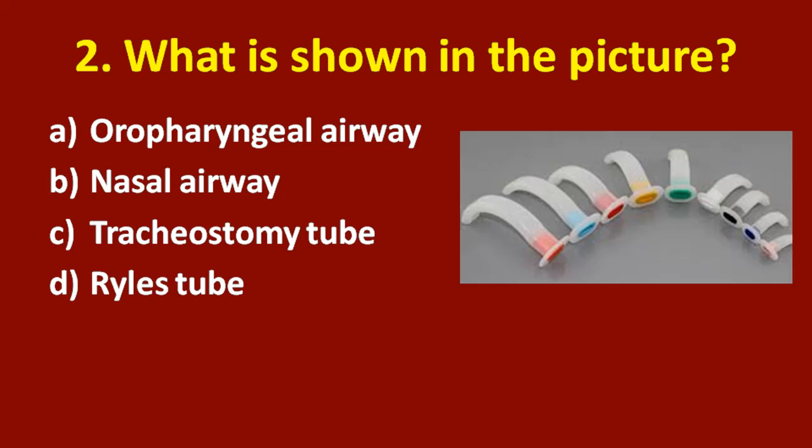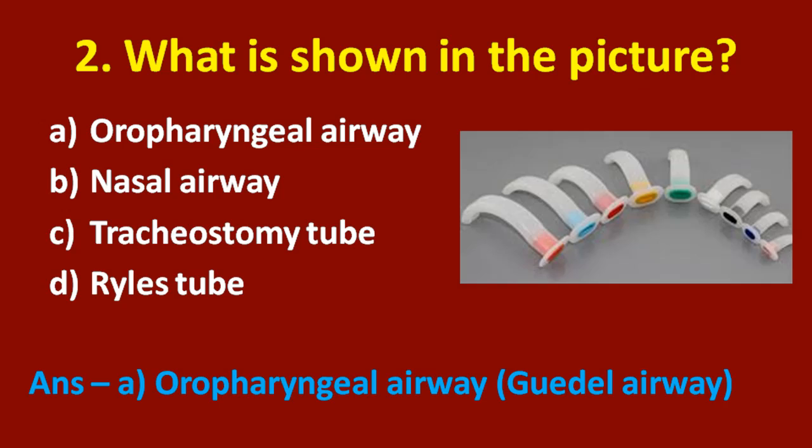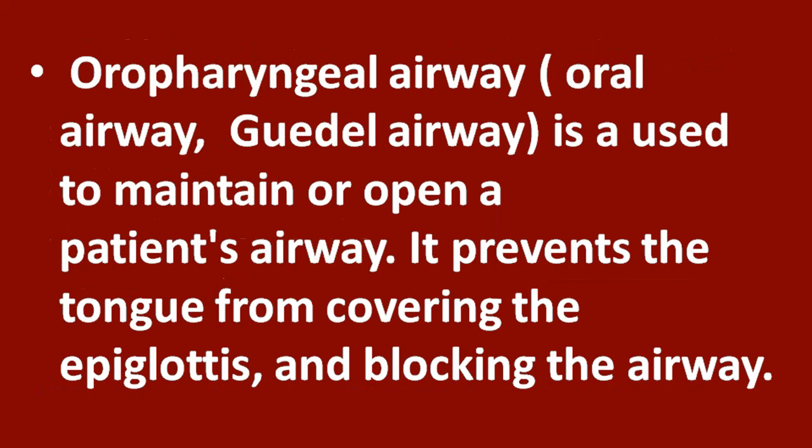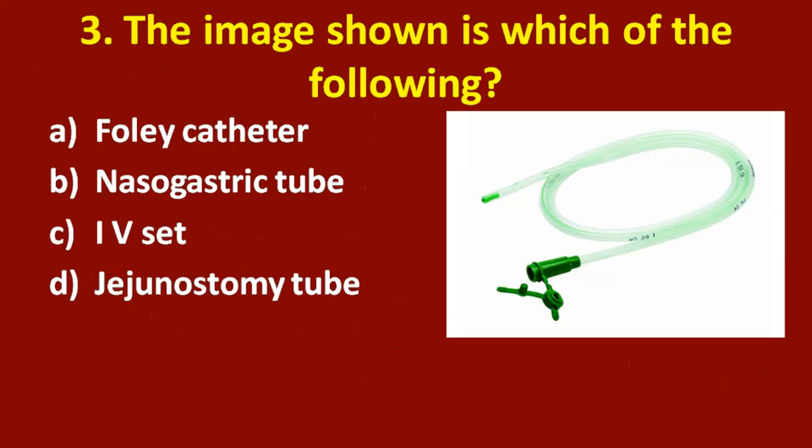Second question: what is shown in the picture? Option A: oropharyngeal airway. Option B: nasal airway. Option C: tracheostomy tube. Option D: Ryle's tube. The correct answer is option A, oropharyngeal airway or Guedel airway. Oropharyngeal airway is used to maintain or open a patient's airway. It prevents the tongue from covering the epiglottis and blocking the airway.